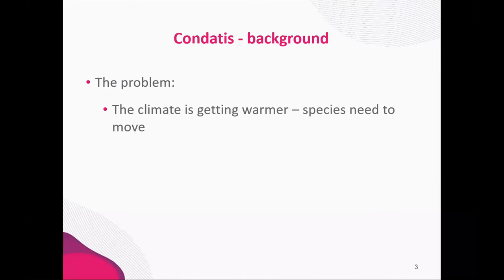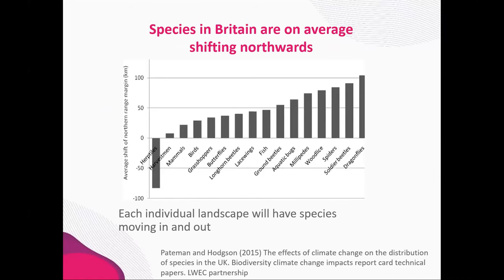Condatus was developed to address two global conservation problems and a gap in the evidence base for conservation planning. The first problem is climate change. Because of climate change, the suitable climates that species can survive in are shifting geographically, and species are also shifting geographically. Many species need to move away from their existing habitat as it becomes too warm, finding cooler habitat further north or at higher altitude, moving through the landscape over many generations until they reach a suitable long-term refuge. We can see the range shift of a whole host of UK species, where almost all groups are moving northwards, and this causes problems as each part of the landscape has species moving in and species moving out.